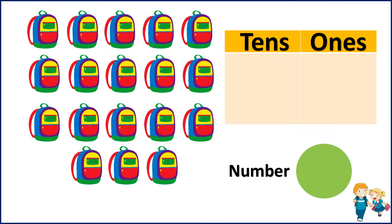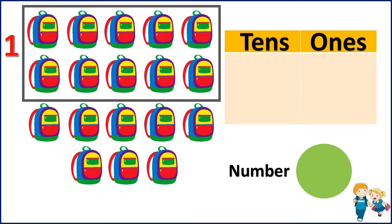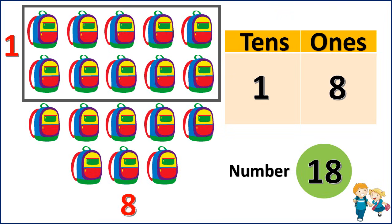So let's start counting the number of bags: 1, 2, 3, 4, 5, 6, 7, 8, 9, 10. So this is 1 ten. Now let's count the remaining bags: 1, 2, 3, 4, 5, 6, 7, 8. So we have 8 bags. In the 10s place we have 1 ten, and in the 1s place we have 8. So the number is 18.